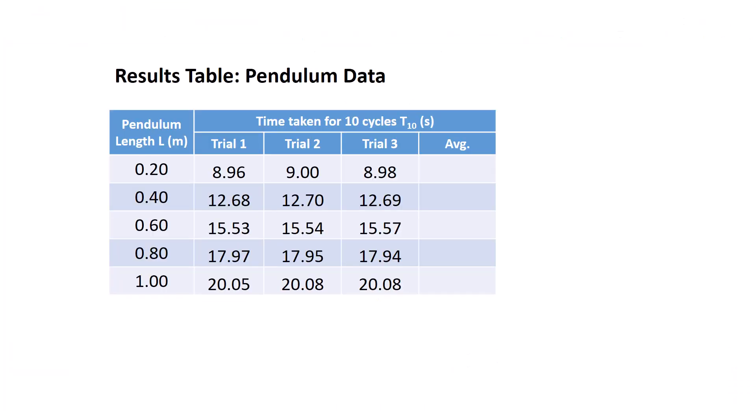I've used the PhET simulator to collect the following data. The table shown displays five pendulum lengths and three trials for each of the 10 cycles. What we need to do now is take the average time for the three trials of the 10 cycles. So if we look at the first example of pendulum length 20 centimeters, we have three trials for the 10 cycles. We total those, divide by three and that gives us the average.